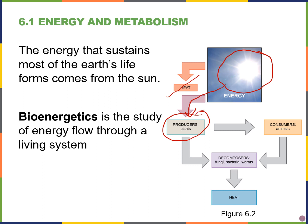Producers can capture sunlight and use it to produce organic molecules like glucose, which consumers will use. Once the plants and animals — the producers and consumers — die, they are broken down by decomposers, which can harvest some of the energy found in those chemical bonds, but again some of that energy is lost in the form of heat.